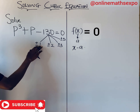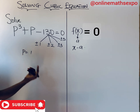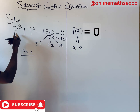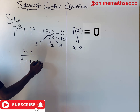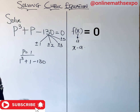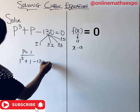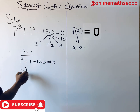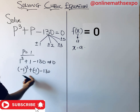Let's use our trial-and-error method. Put p as one: plugging p = 1 gives us 1 cubed plus 1 minus 130, which is 1 + 1 − 130. That is not close to zero, so p = 1 is not a factor. If you also try p = −1, you will still notice that it is not close to zero either.